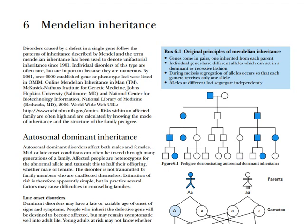The second principle is that individual genes have different alleles which can act in a dominant or recessive fashion. The third principle is that during meiosis, segregation of alleles occurs so that each gamete receives only one allele. And the last principle is that alleles at different loci segregate independently.